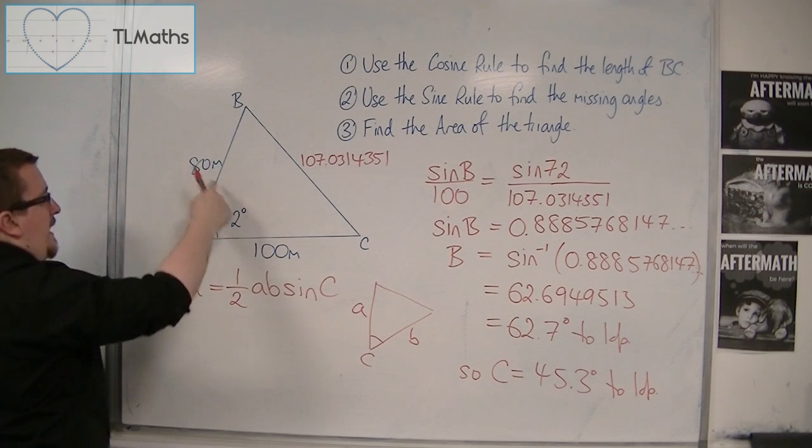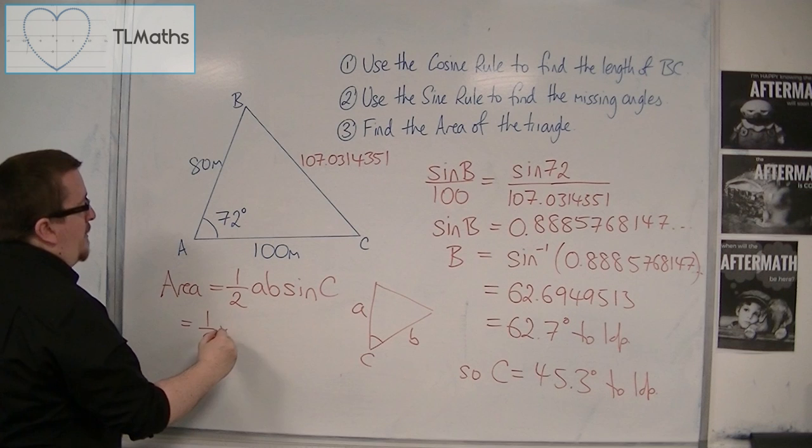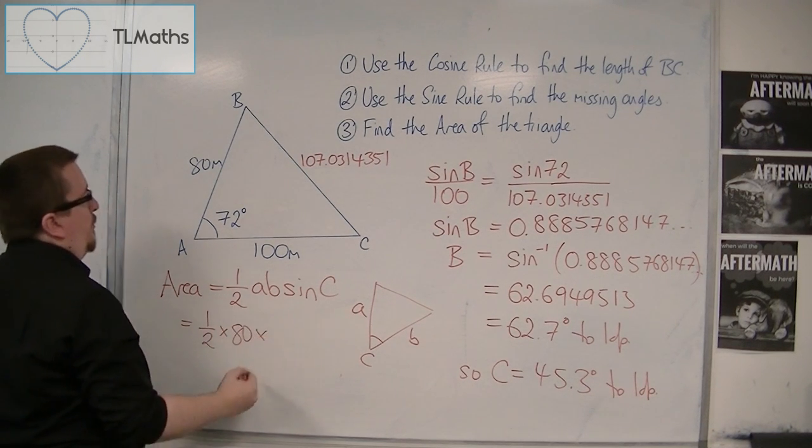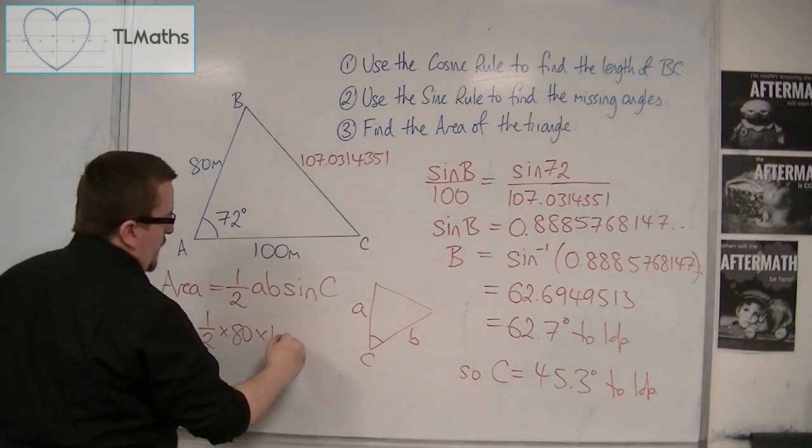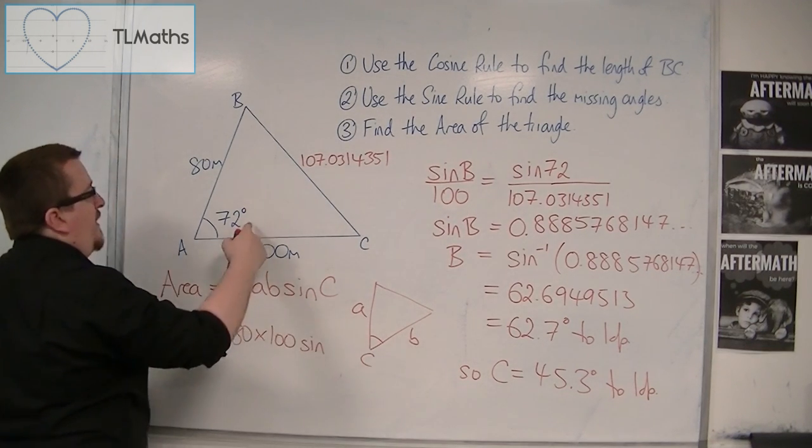OK? So, let's say I'm using these three here. This is equal to 1 half times a, which can be the 80, times by b, which can be the 100, times by sine of c, the angle between them.